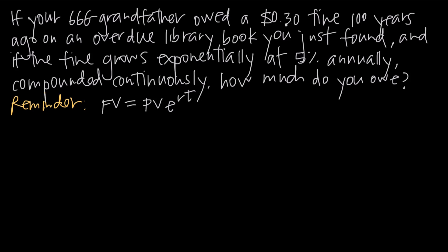So what we've been told is that our great-great-great-grandfather owed a 30-cent fine. So that's going to be the present value or the initial value of the fine. We want to plug 30 cents in for PV, so we'll go ahead and say 0.30 for PV. Then we're going to have the number e here. 100 years ago, so that's going to be time t, so we're going to have r times 100 for time t.